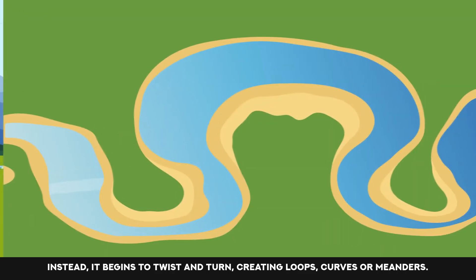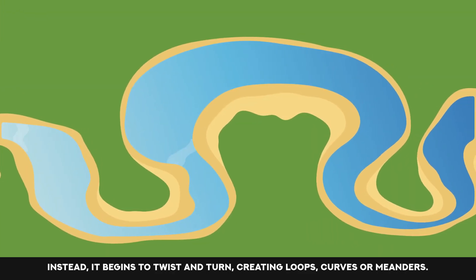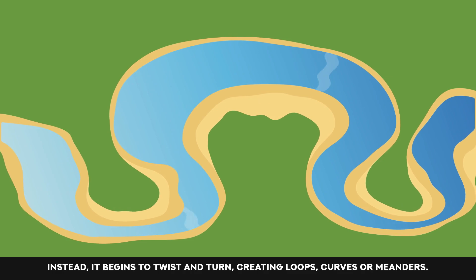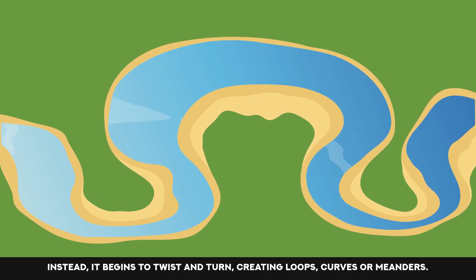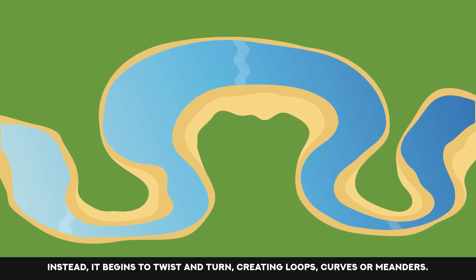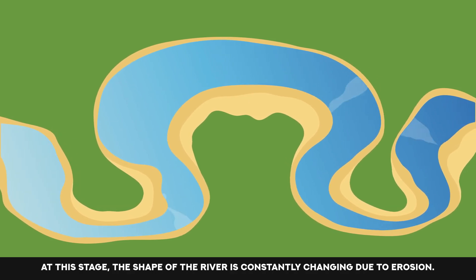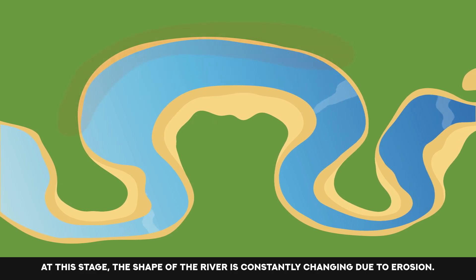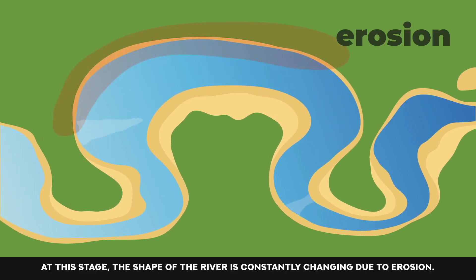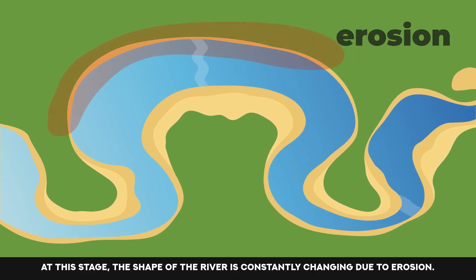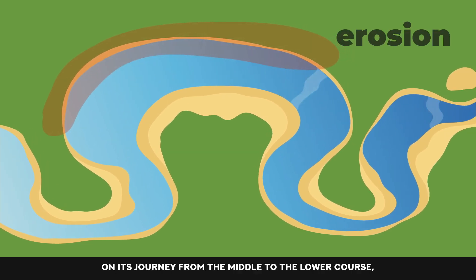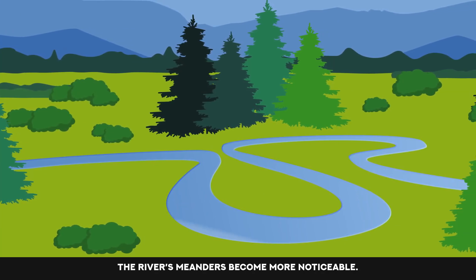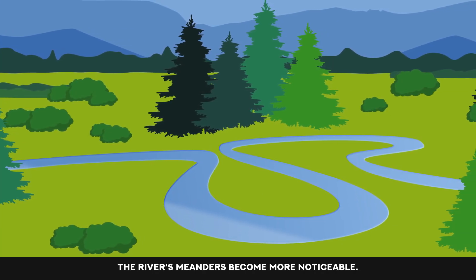Instead, it begins to twist and turn, creating loops, curves or meanders. At this stage, the shape of the river is constantly changing due to erosion. On its journey from the middle to the lower course, the river's meanders become more noticeable.